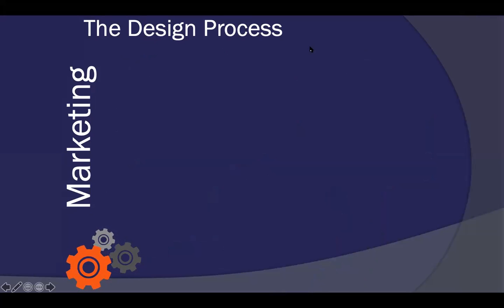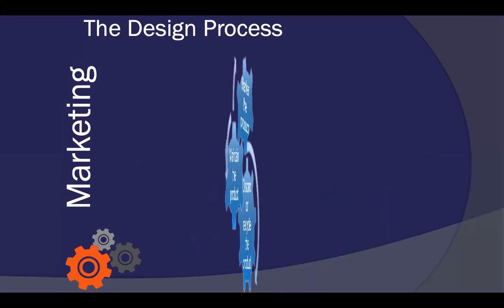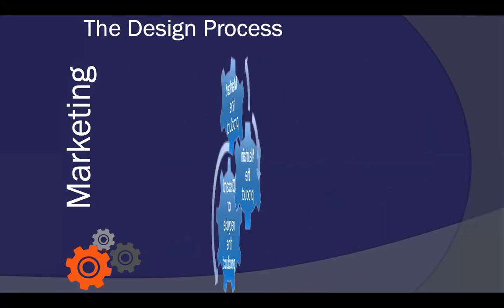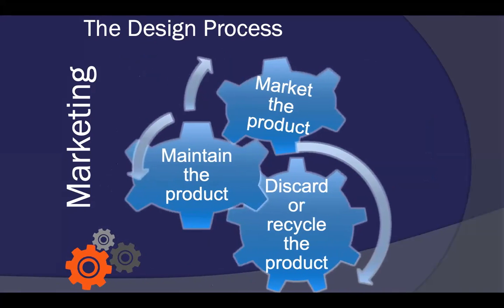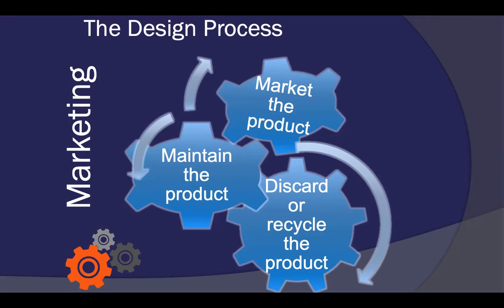Now we move on to phase three of the design process, which is marketing. Marketing introduces the manufactured object to people who might need it — that's on page 377. It also gets the object distributed to those who are ready to buy it. It involves organizing the product's commercial development, setting the sales price, doing promotion, setting up delivery, and ensuring the product's maintenance throughout its useful life.